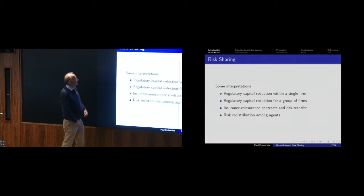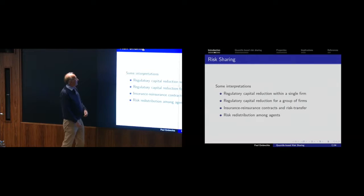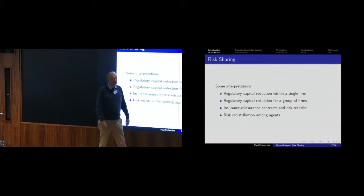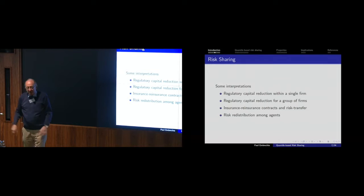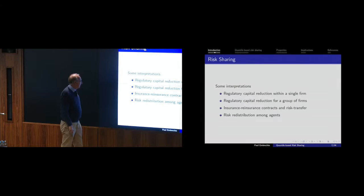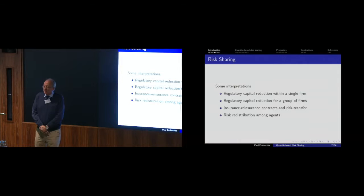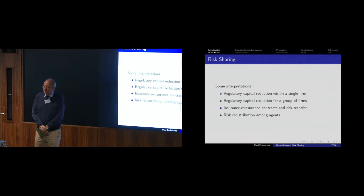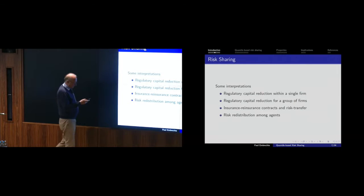Some interpretations of these allocations: it can be capital reduction within a single firm where N agents are N desks, or a holding with N subdivisions. It can be regulatory capital reduction for a group of firms. A standard interpretation is insurance and reinsurance: you're an insurer and your agents are yourself plus N-minus-one reinsurers subdividing the risk of a catastrophe — a very typical overall risk distribution among agents.